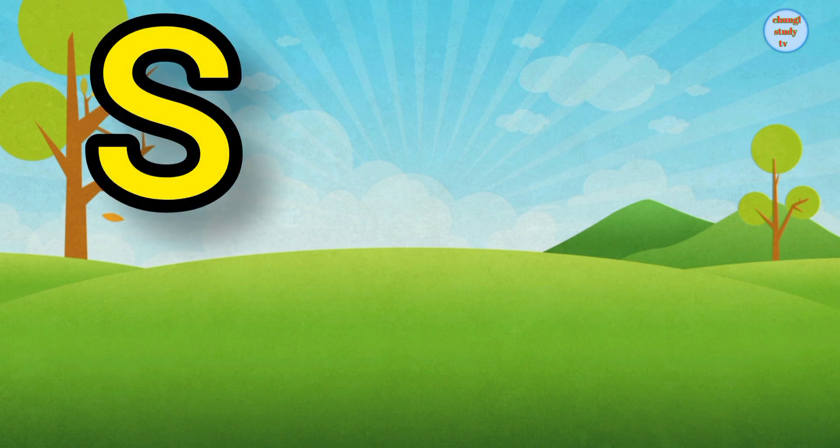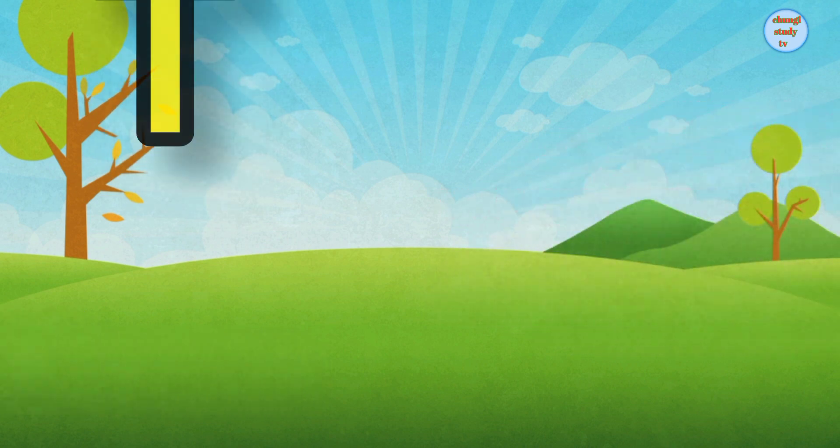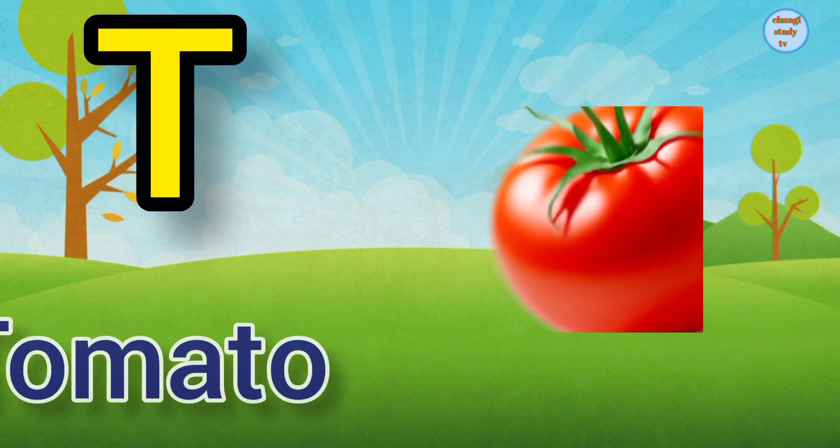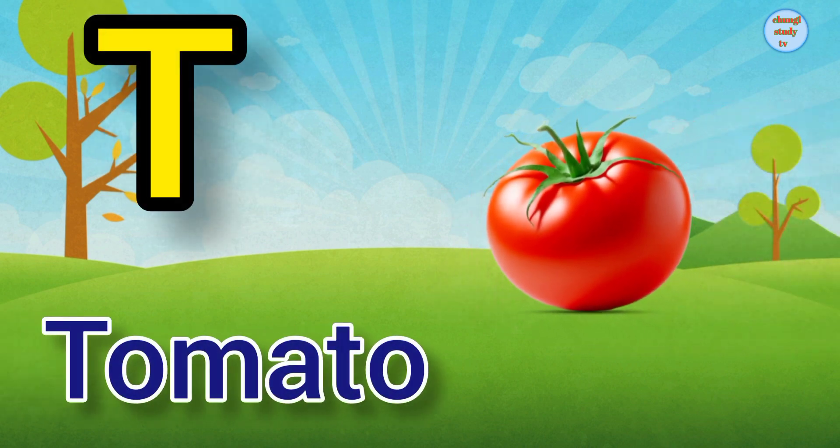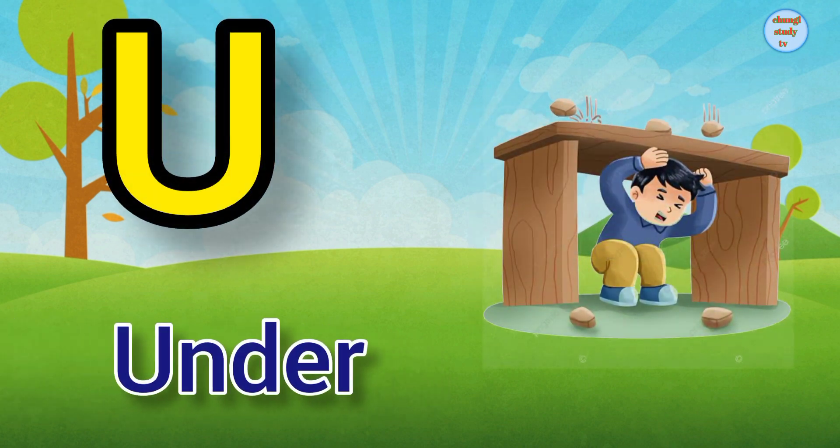S. S for Swan, Swan means hunts. T. T for Tomato, Tomato means tomato. U. U for Under, Under means neech.